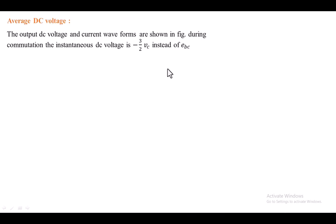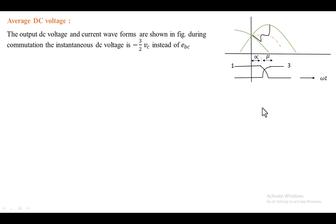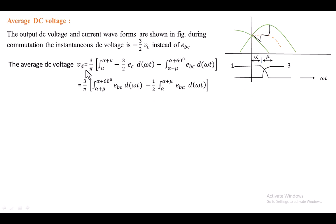For the average DC voltage, within every 60 degrees we can find the overlap angle. After the overlap angle, only two devices are connected. During the overlap angle, the output voltage is reduced — that is equal to minus (3/2)Vc instead of Vc. We can observe the output voltage decreasing during the overlap angle, while the current through T1 is decreasing and the current through T3 is increasing. The average output voltage is given by: Vd equal to (3/π) times the integral from α to α+μ of (−3/2)Ec dωt plus the integral from α+μ to α+60° of Vc dωt.